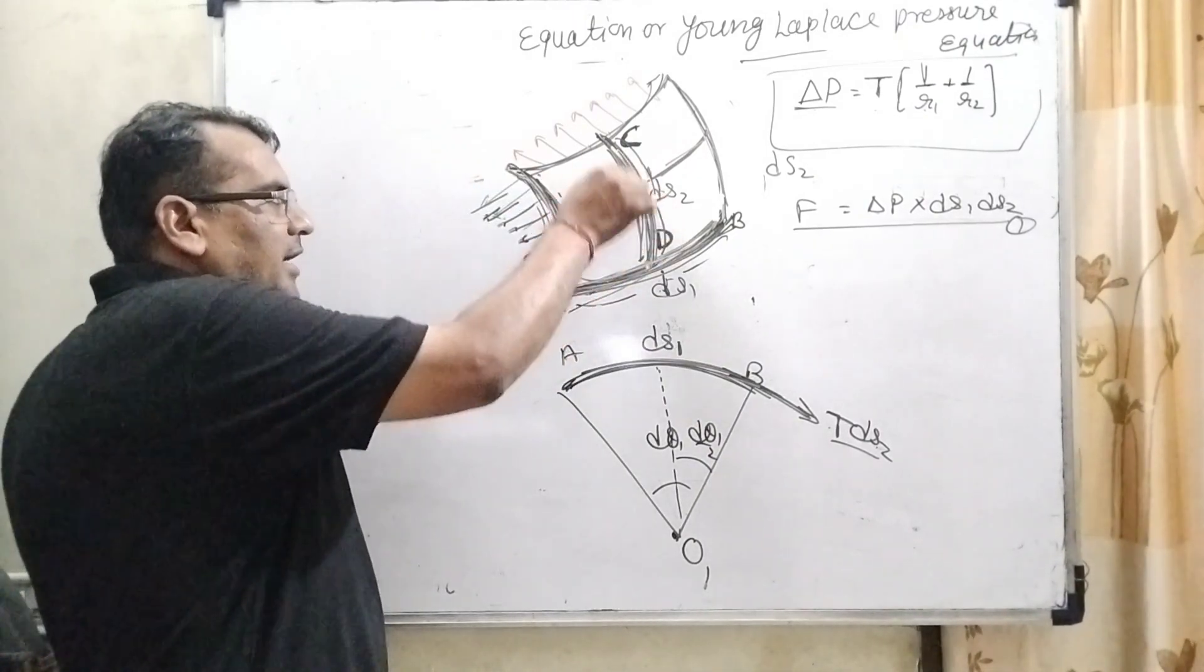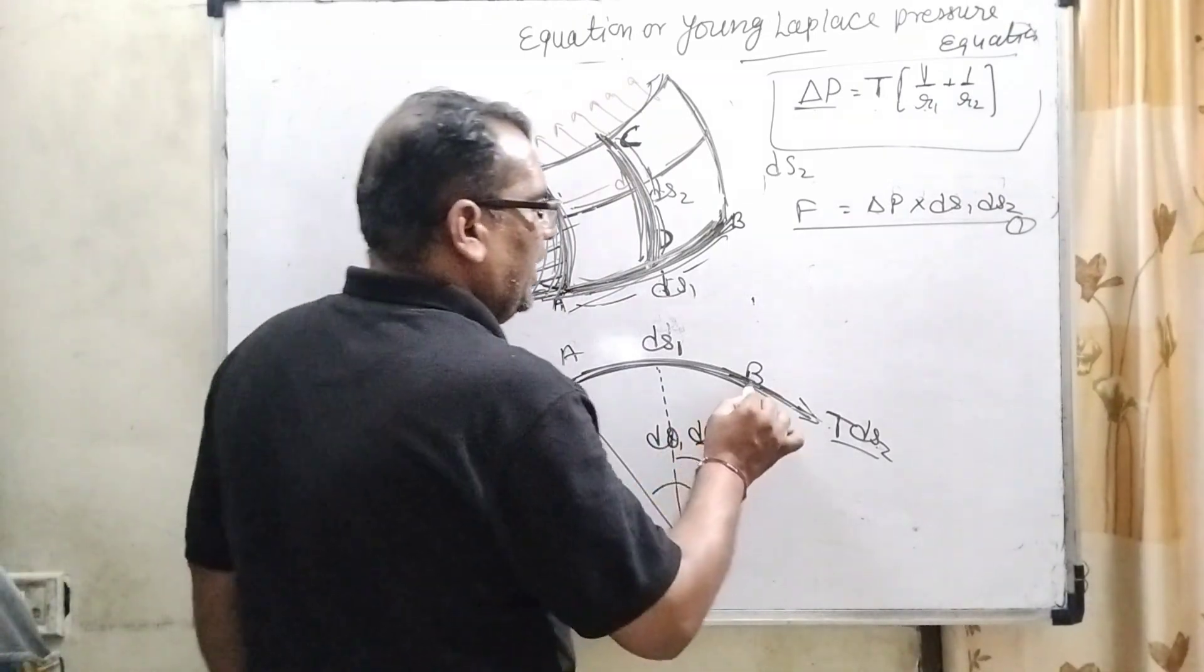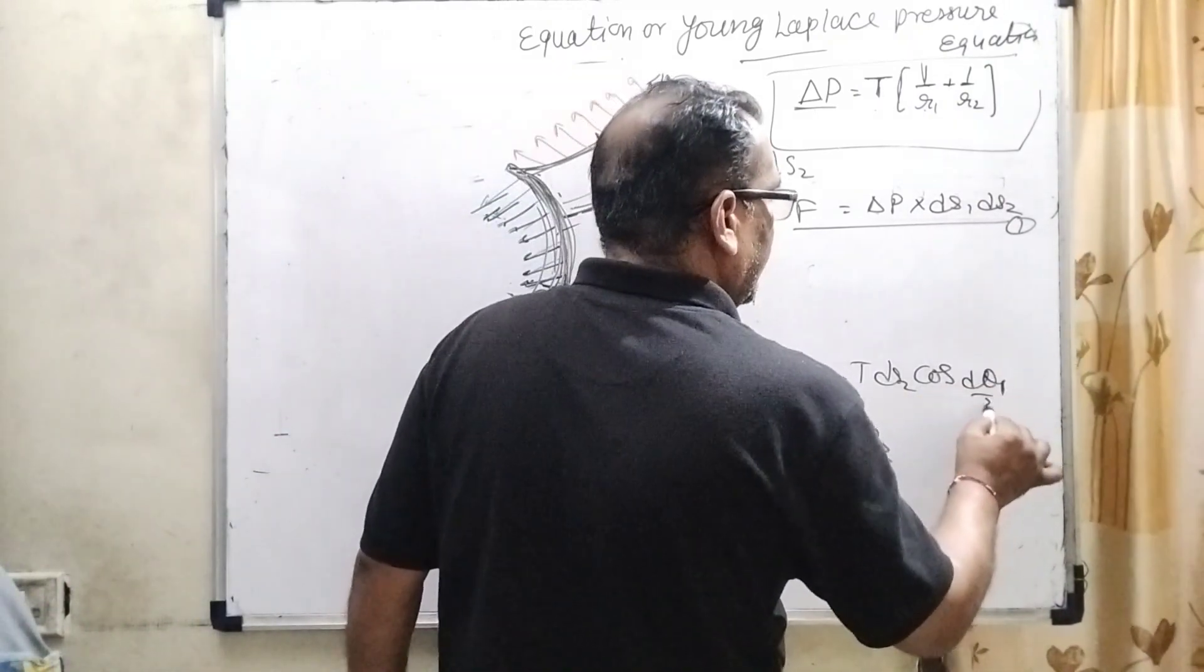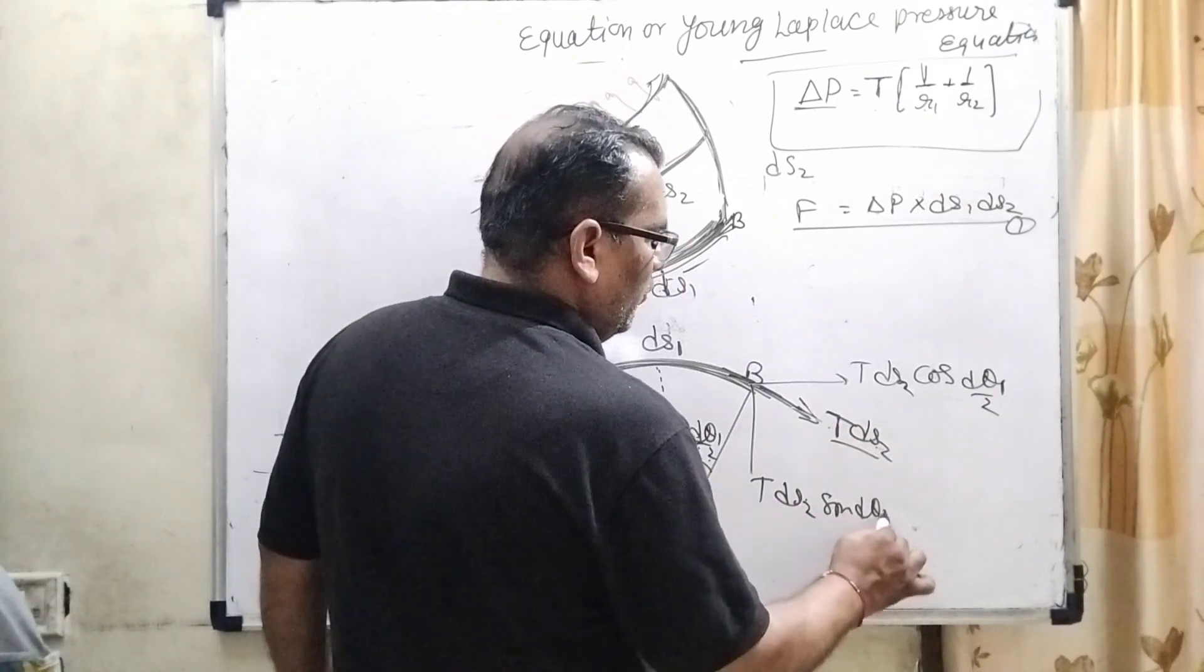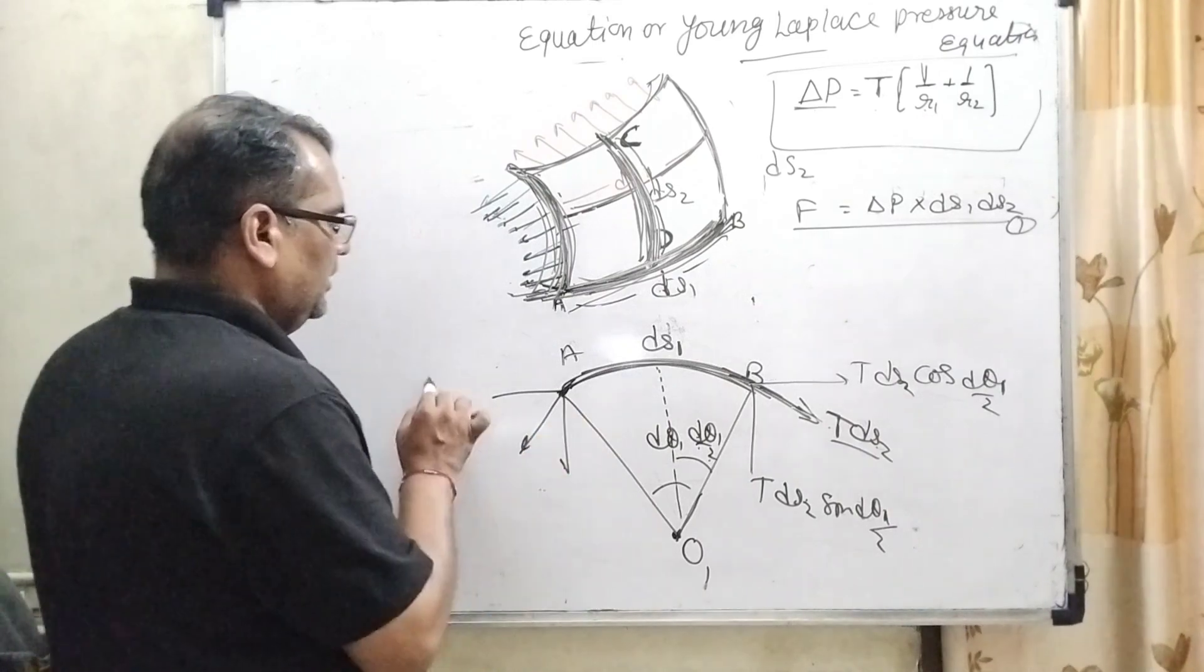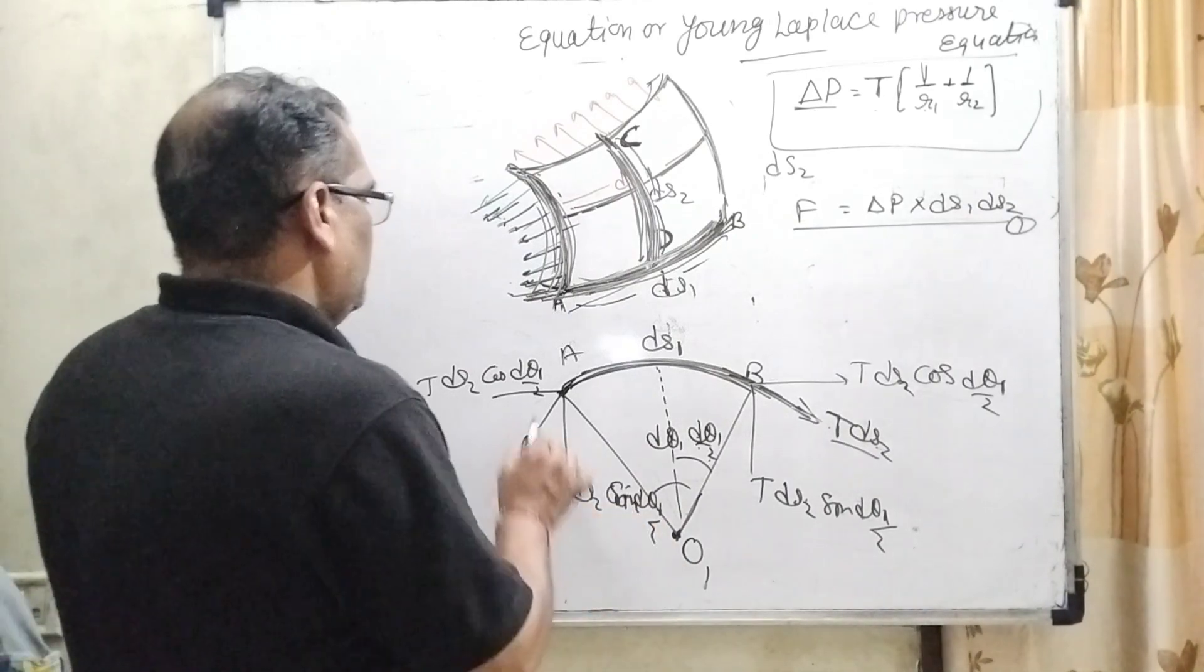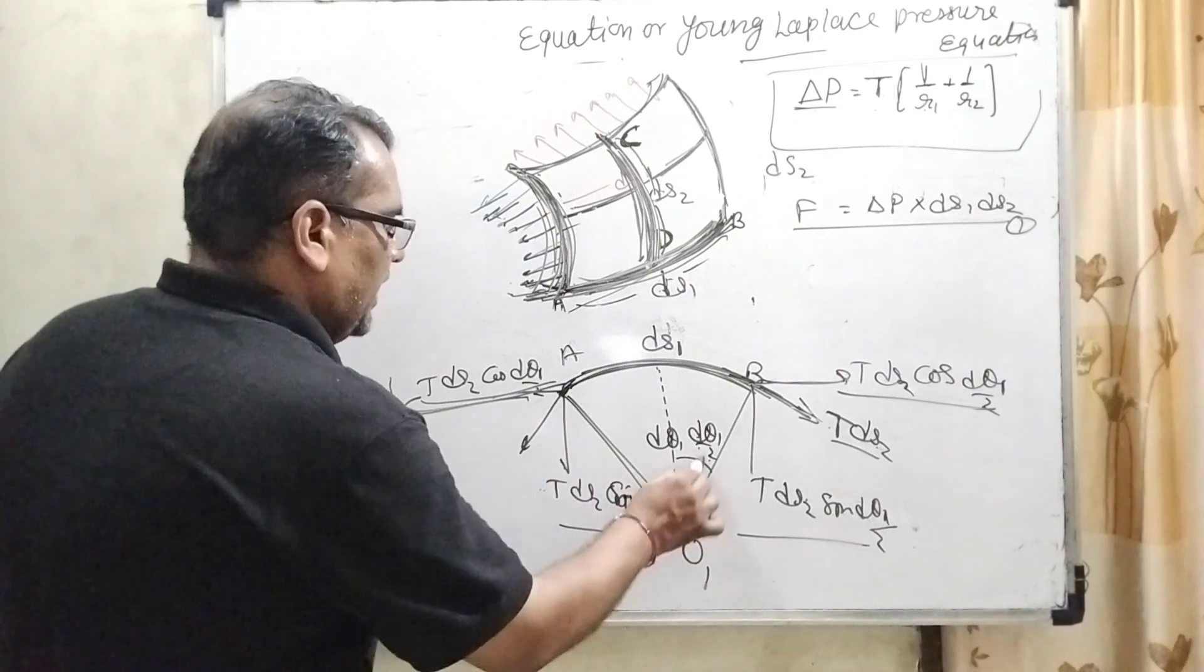What is D? It is DS2. So therefore, this total pressure DS2 is acting towards the tangent. We have to divide it into two components. First component, T DS2 sin D theta 1 by 2, and the same thing here, T DS2 sin D theta 1 by 2. The same process on the other side, divided into components: T DS2 cos D theta 1 by 2, and T DS2 cos D theta 1 by 2. You can see that the horizontal components cancel out each other.